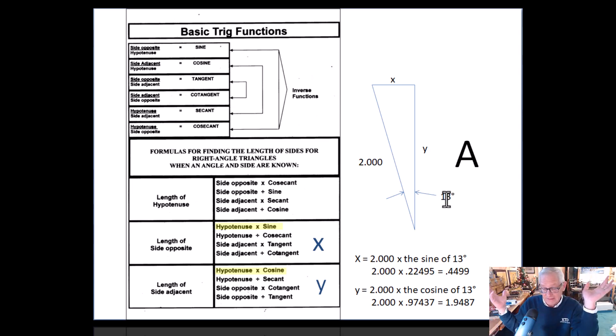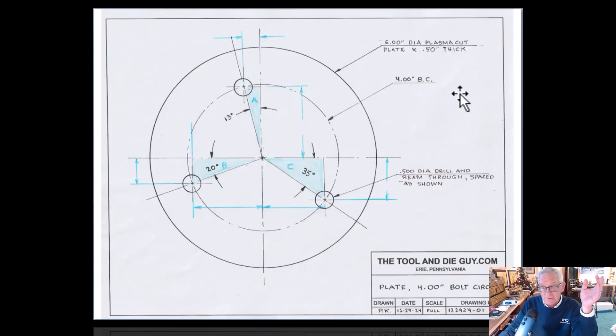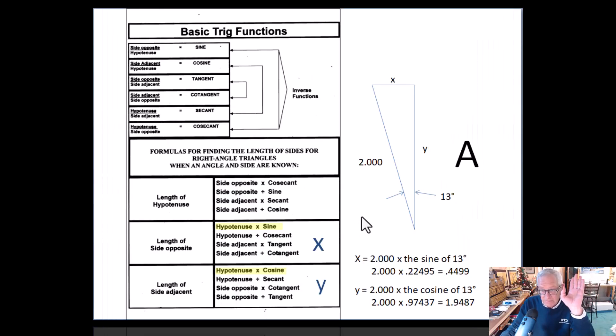We know the 13-degree angle—that could be 13.25 degrees, whatever, but in this case I made it 13. And then we also know the hypotenuse, the longest side. It's two inches. Why do we know it's two inches? Because it's a four-inch bolt circle, and half of that is two inches. Easy peasy, right?